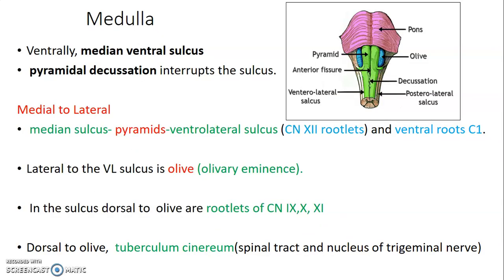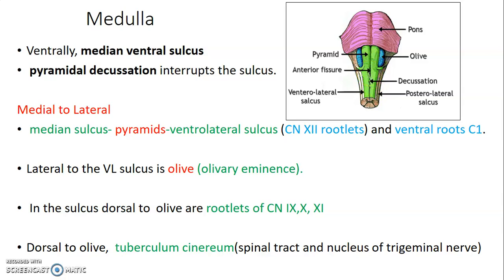Starting with the medulla oblongata: ventrally we have a median ventral sulcus, as shown by the arrow. It is usually interrupted by the pyramidal decussation, where nerve fibers of the pyramids cross at the midline — fibers from the right cross to the left and vice versa. This crossing interrupts the median ventral sulcus.